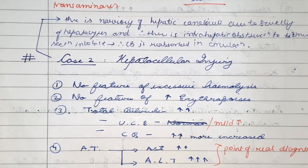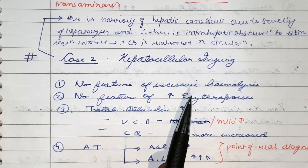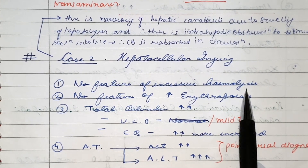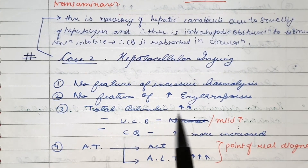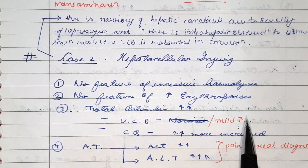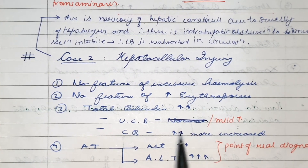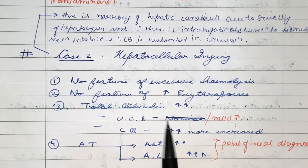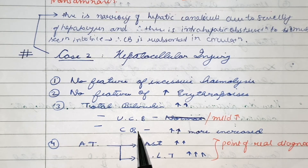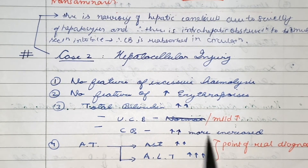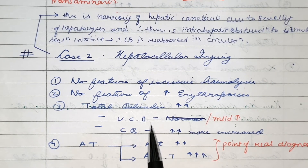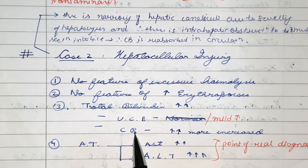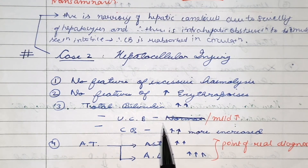Now let's talk about case 2: hepatocellular injury. In this there is no feature of excessive hemolysis and no feature of erythropoiesis. Total bilirubin increases. Unconjugated bilirubin increases mildly and conjugated bilirubin increases more. Unconjugated bilirubin is high because there is decreased efficiency by liver cells to convert it to conjugated bilirubin. Conjugated bilirubin spills into blood because when there is hepatocellular injury, the hepatocytes inflame and block their canaliculae.